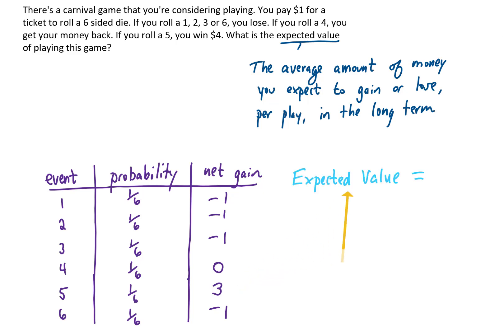Now, to calculate our expected value, we're going to take every probability in this table and multiply it by the net gain in that table. For example, for this first row rolling a 1, we're going to take 1 sixth and multiply that by negative 1. We're going to do this in every single row, and we're going to add all of our results together, and that number is going to be our expected value.